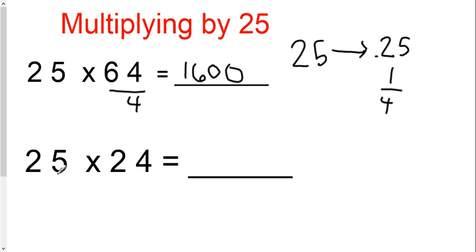Let's see another example. 25 times 24. Take the non-25 number divided by 4. 24 divided by 4 is 6. And just like before, I called that number 0.25, so I must add two zeros. 600.